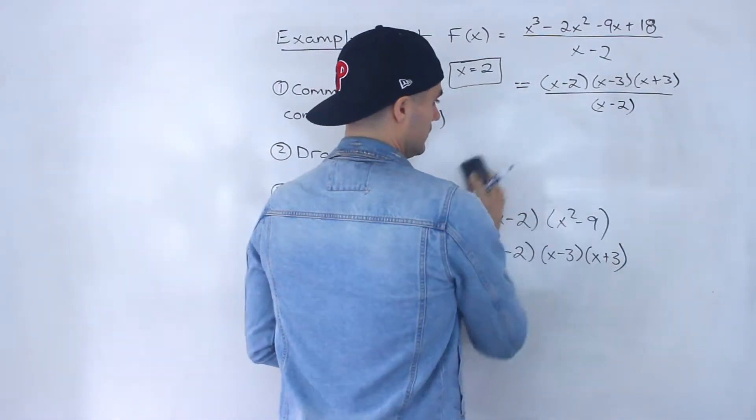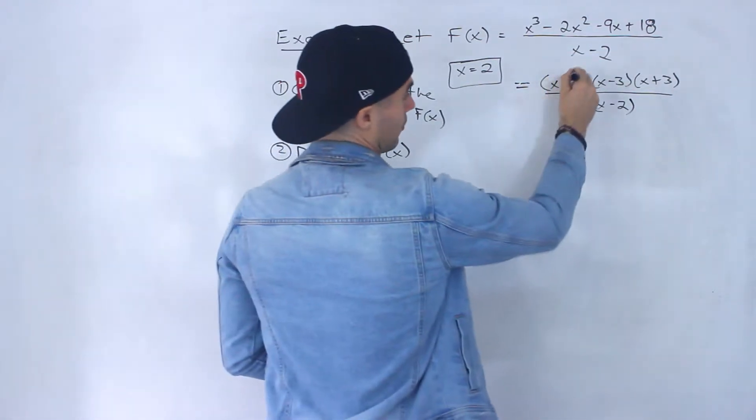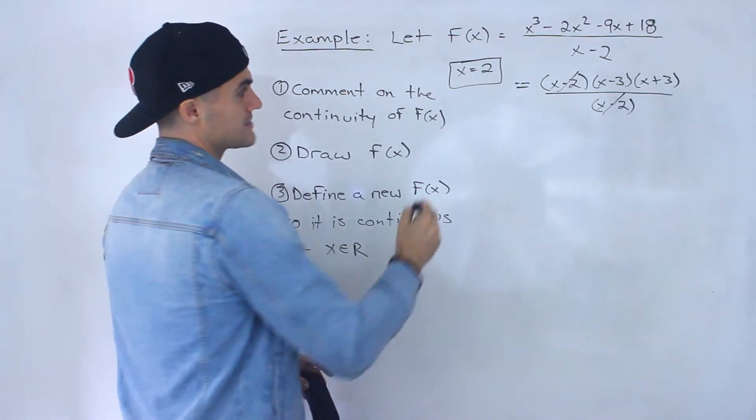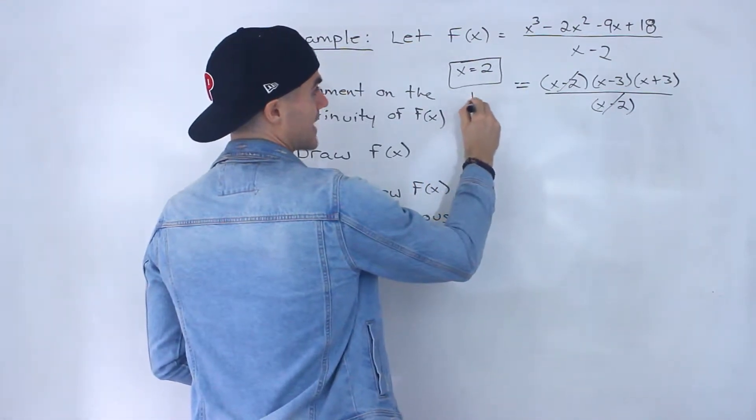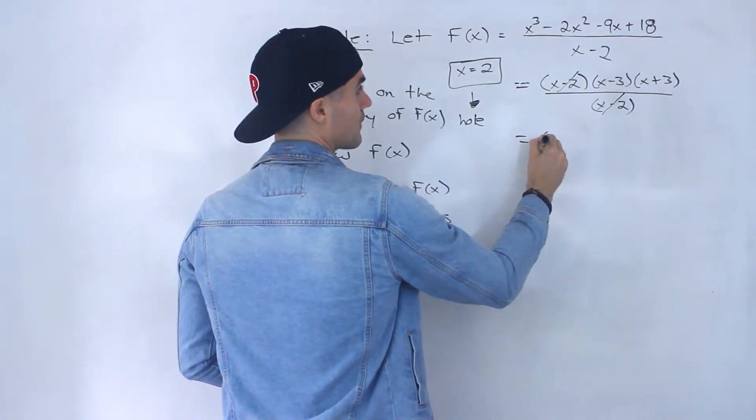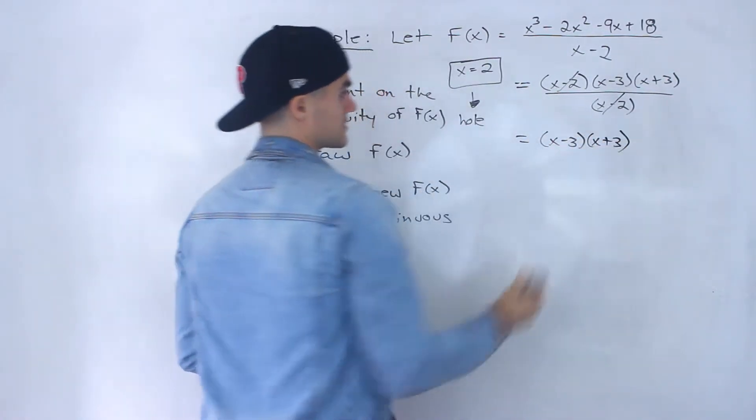all over x minus 2. Well, notice now, at this point, these two factors are canceling out. And so what that means is that at this x value of 2, there's going to be a hole. And we'd be left with x minus 3, x plus 3.